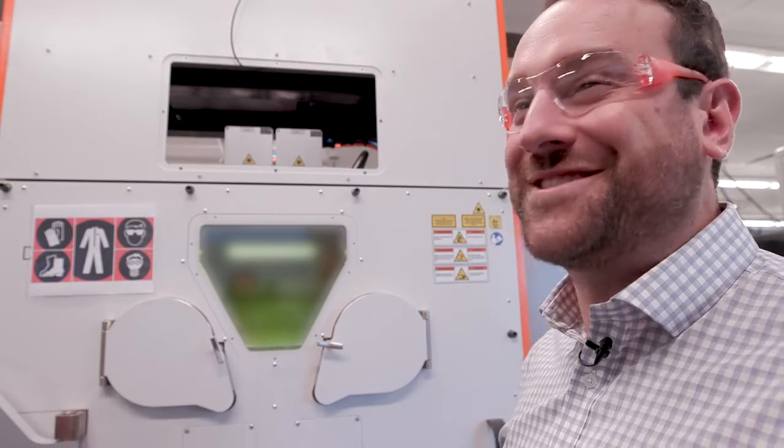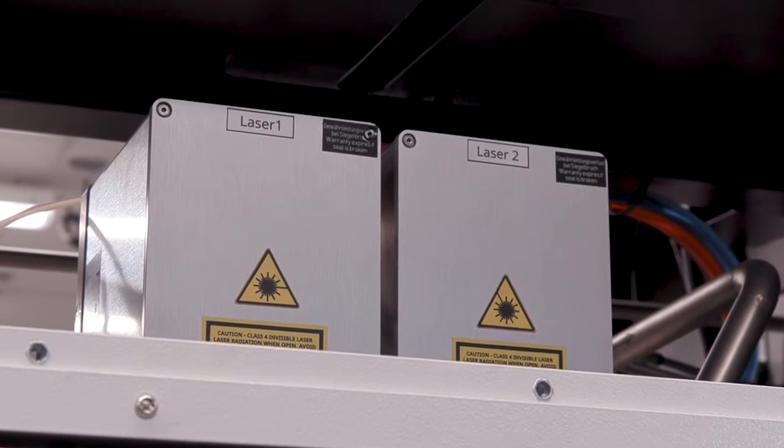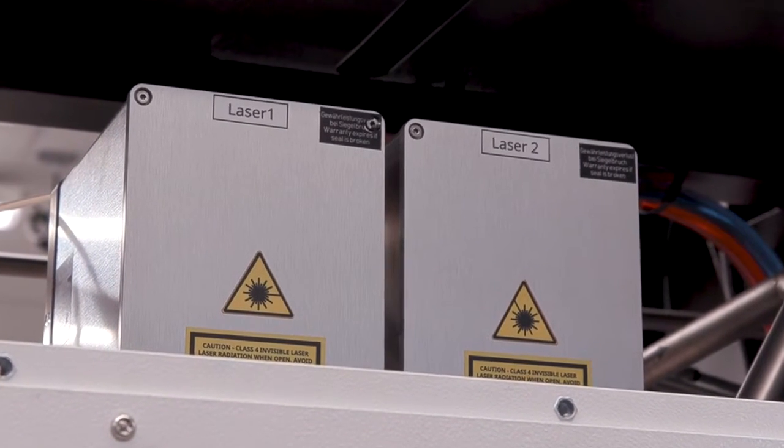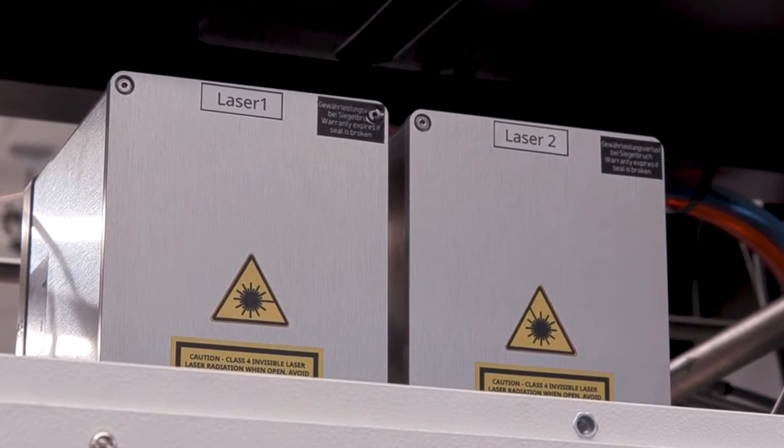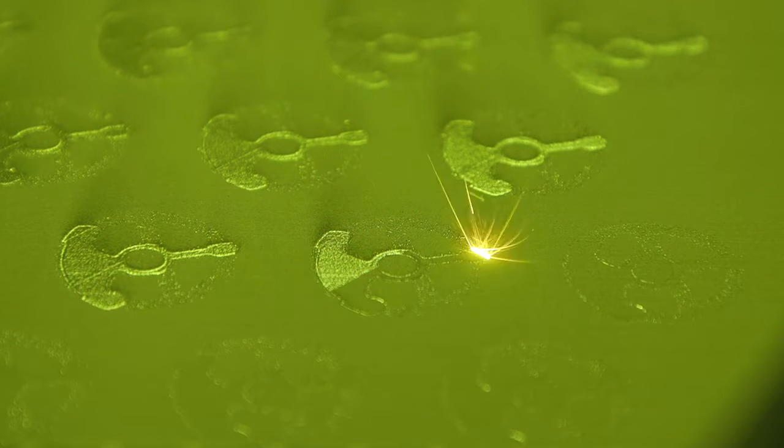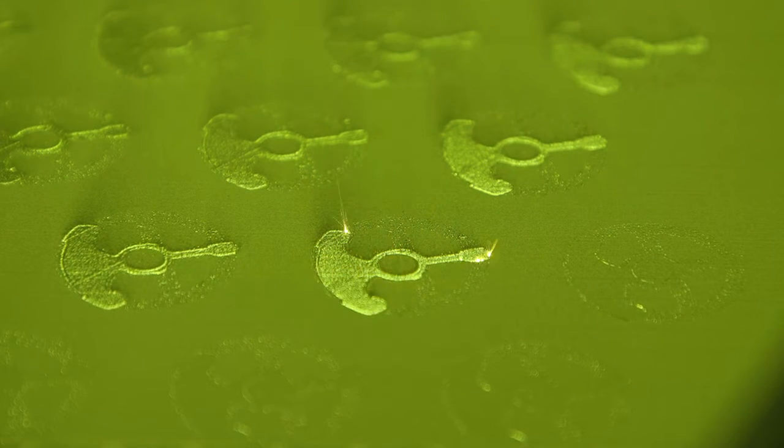The Flex 350 Dual has two lasers. One scan box and then scan box two. What's unique about that is that it's the same optic system as our single laser system, so we have easy scalability up to the dual laser.